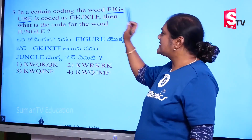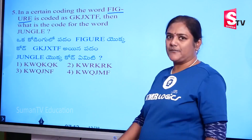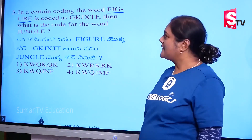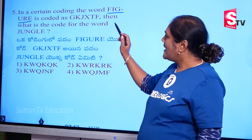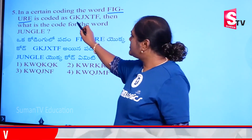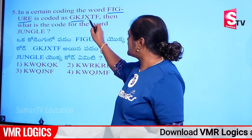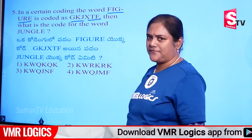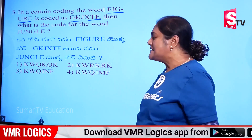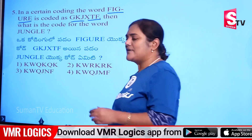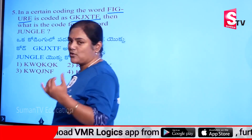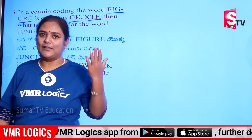Now, the next model is figure. The code: G, K, J, X, T, F. Okay, now I'm going to ask you this question. The code is here.